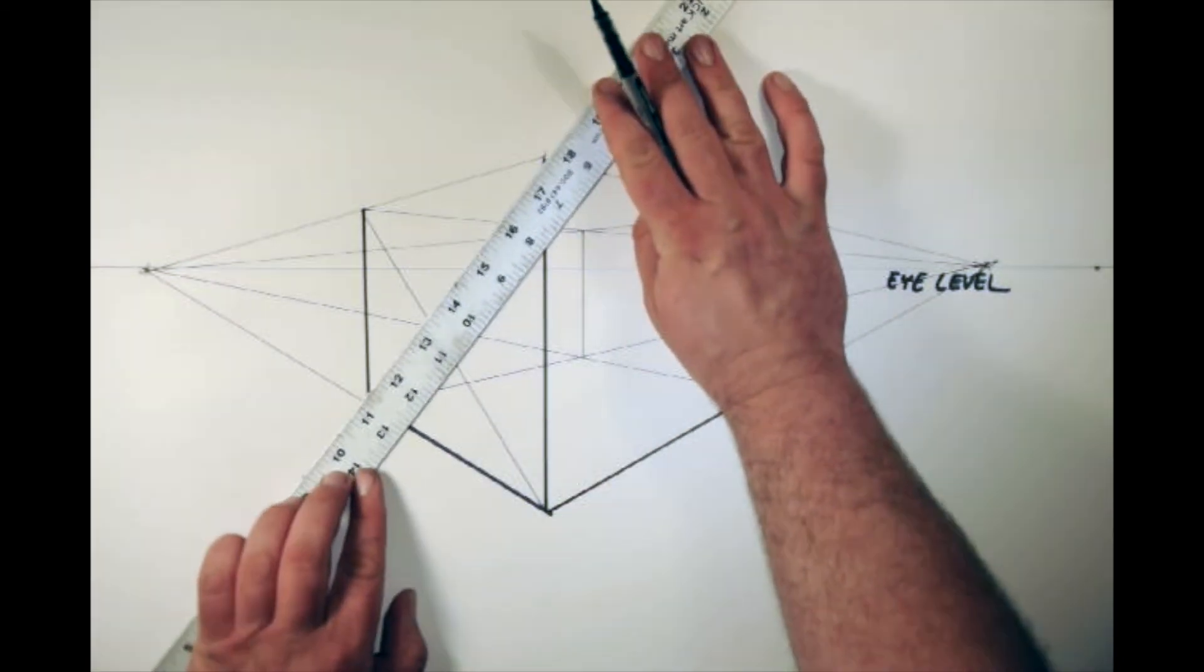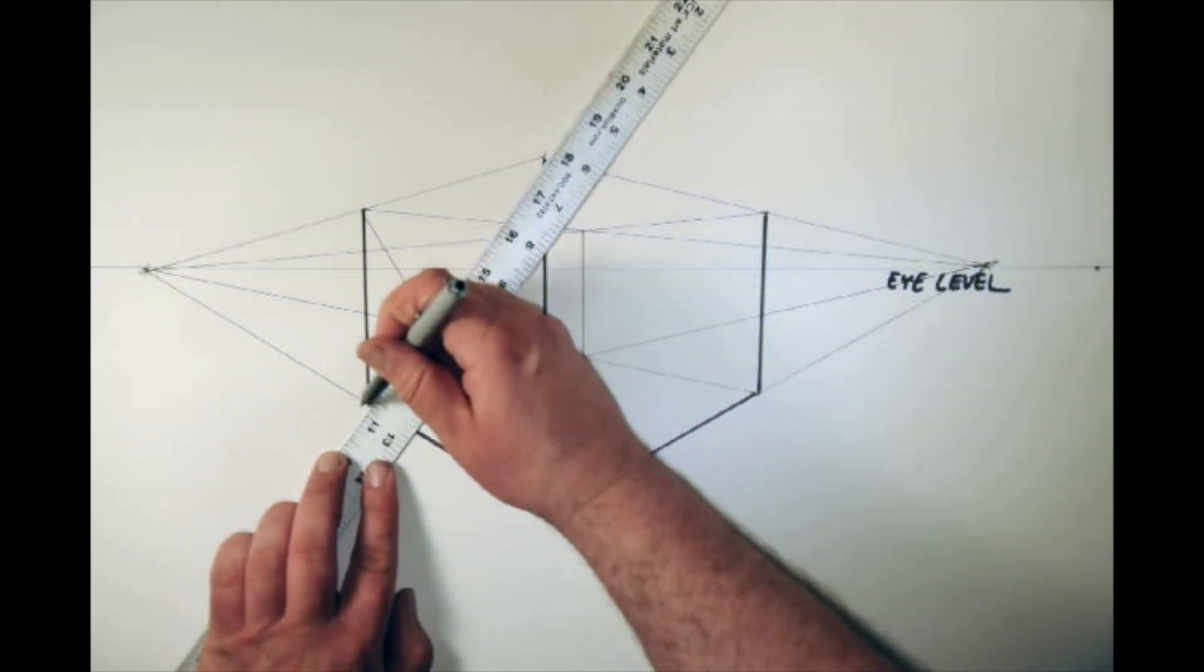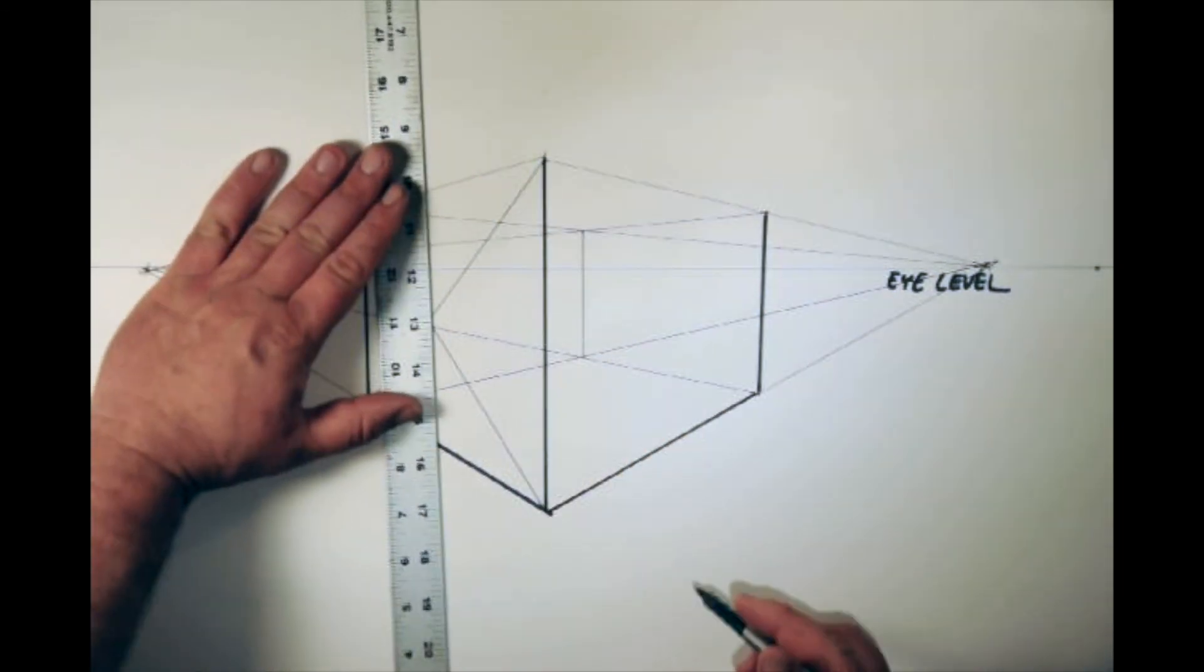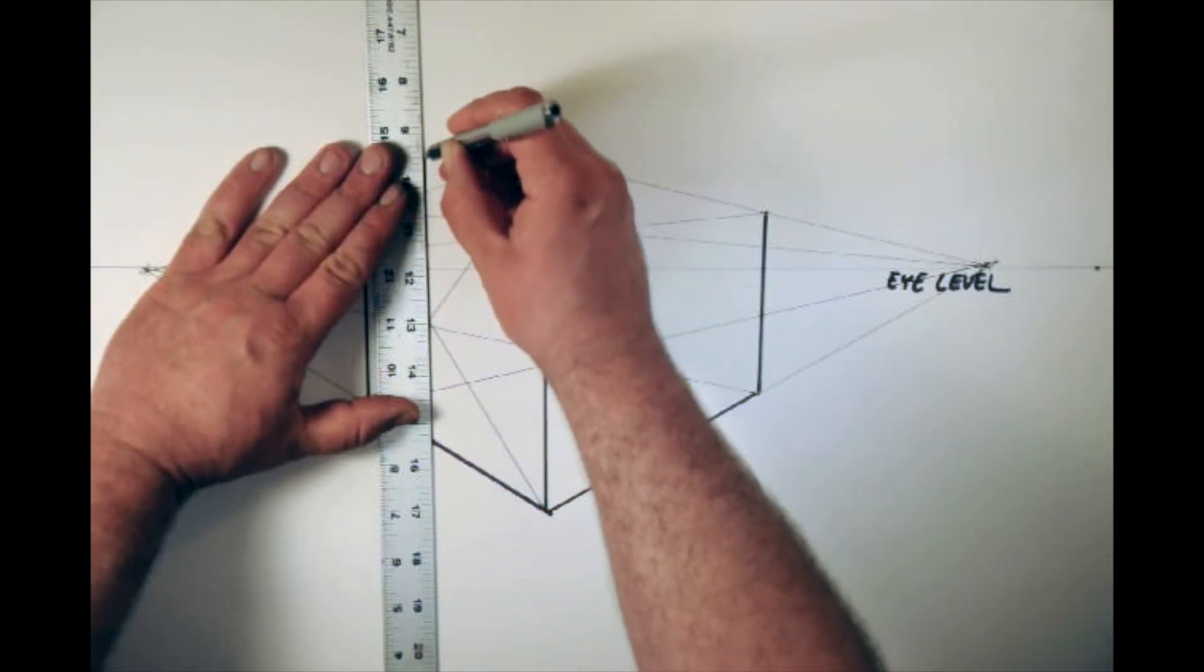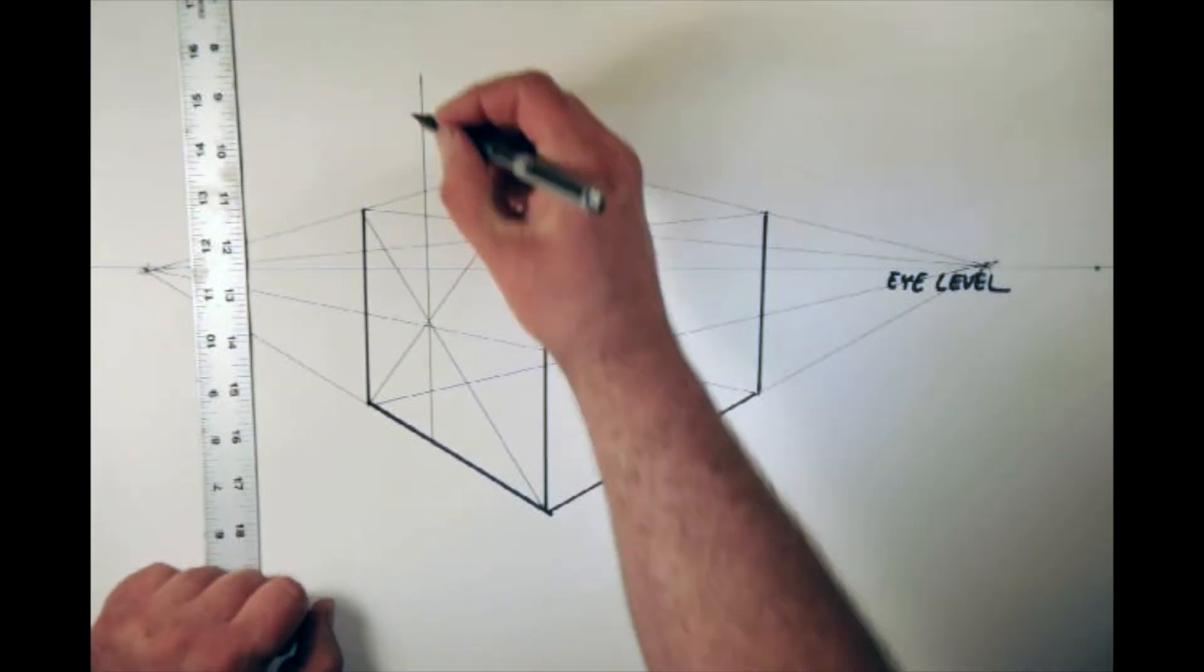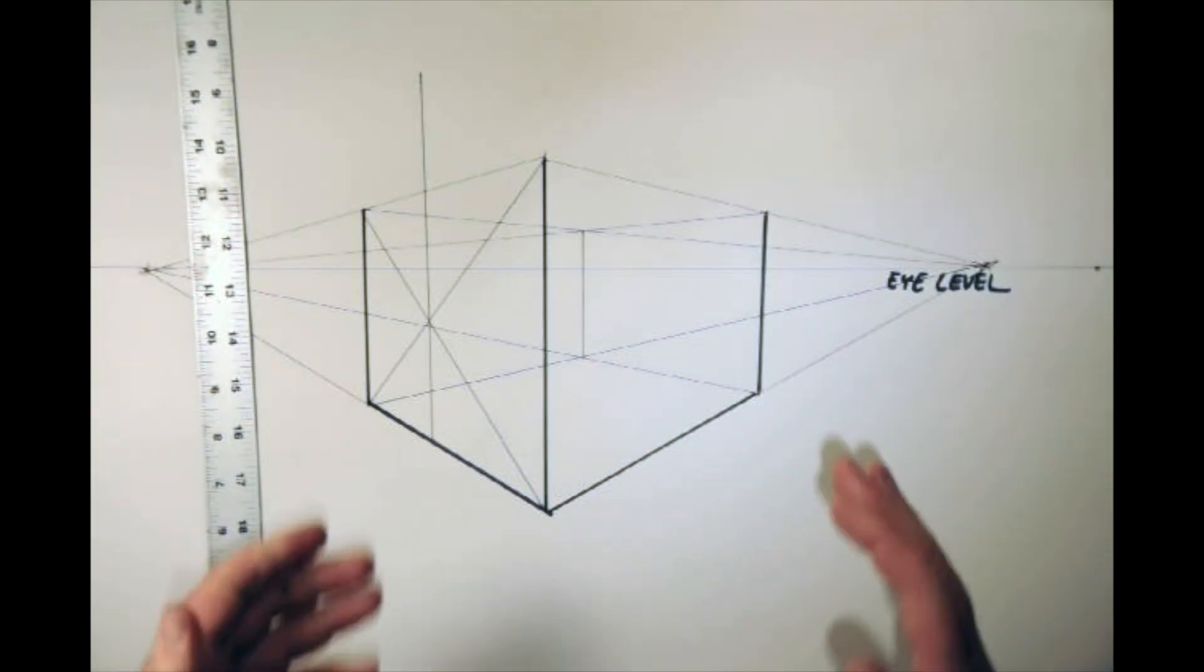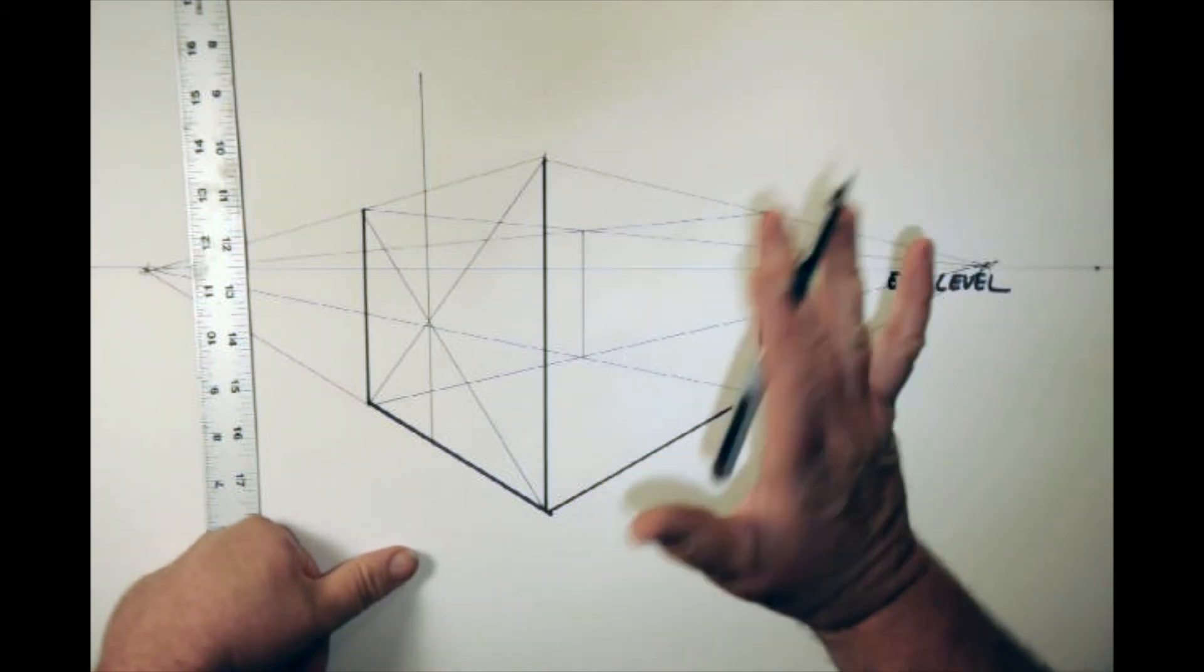And wherever that X falls is where the middle of the box is in perspective. And then I'm going to go ahead and draw this line going up. And depending on where I end that line will determine the pitch of my roof.